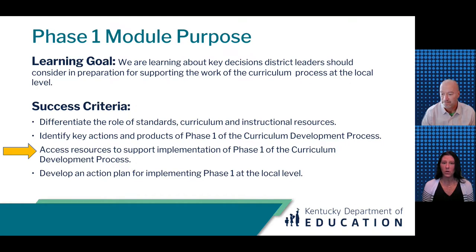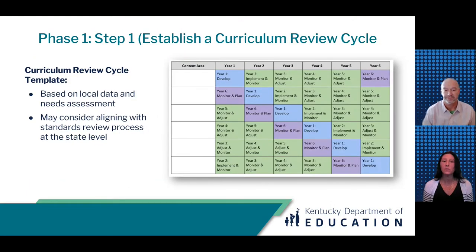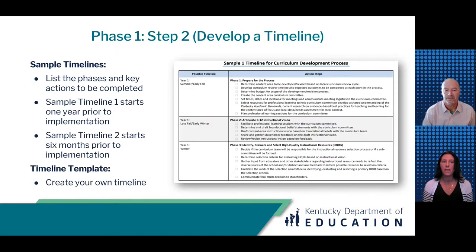Now that you have a better understanding of the work of Phase 1, we're going to spend some time exploring key tools and resources to support implementation back in your district. Step 1 is to establish a curriculum review cycle based on local data and needs assessment. You may also want to consider aligning with the standards review process at the state level. Establishing the review cycle makes the work more manageable by only focusing on one to two content areas per year. Step 2 is to develop a timeline for the scope of the work. The CDP includes two sample timelines — one starting a year prior to expected classroom implementation and one starting six months prior.